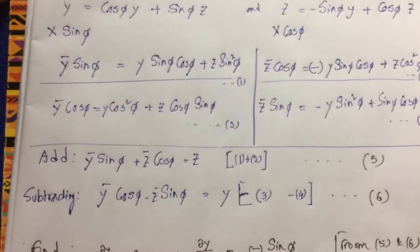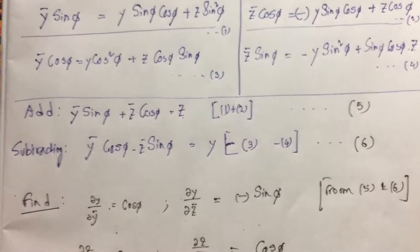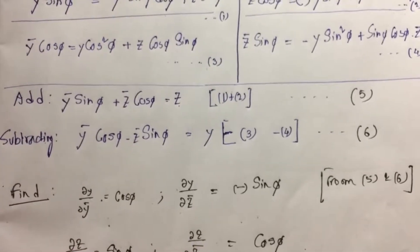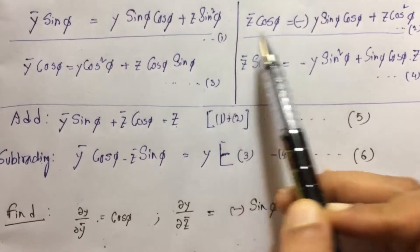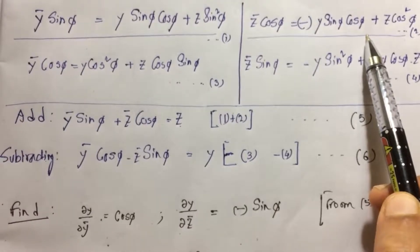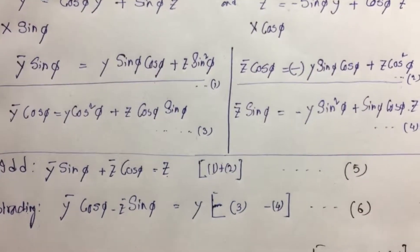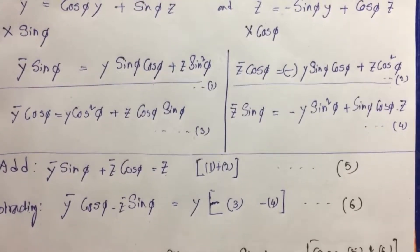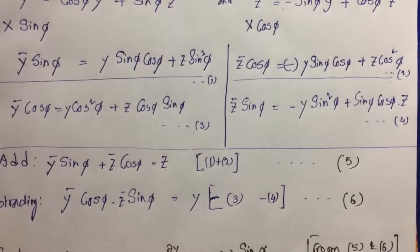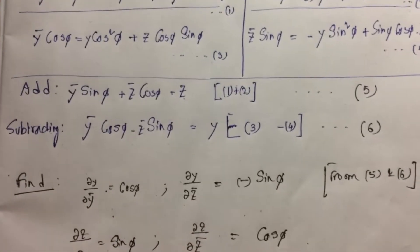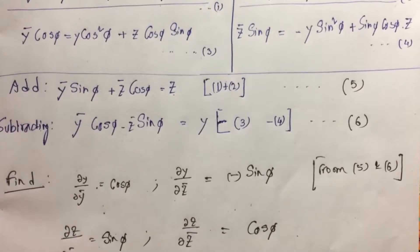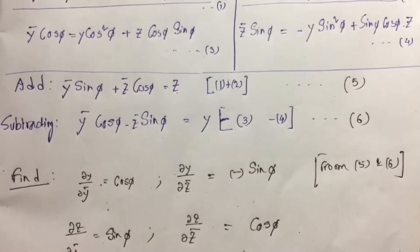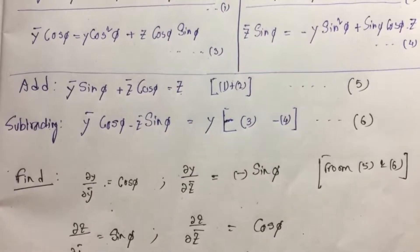Then we got equation 5 by just adding equations 1 and 2. That means we have added these two. So adding equation 1 and equation 2 gives us equation 5. Similarly, we have subtracted equation 3 and equation 4 and we got equation 6.